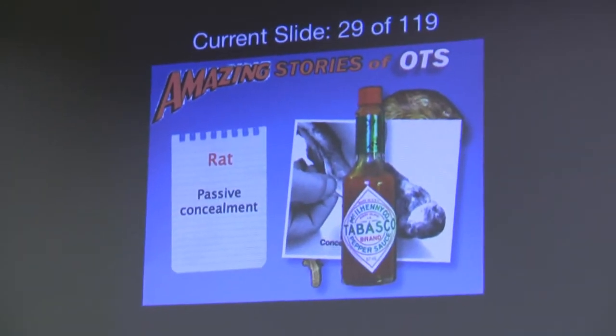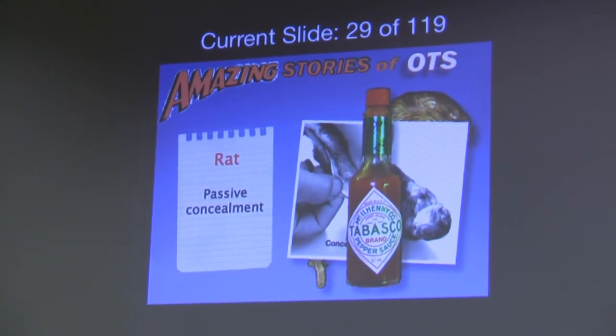Human beings wouldn't pick up a dead rat, but of course a cat would. And that meant the chemists at OTS had to engage in probably a couple million dollar research program to determine how rats wouldn't be picked up — what would cats not like? They finally found a chemical formula for deterring cats from picking up the rats. So you spread a little Tabasco sauce on your dead rat, and your cat won't pick it up.